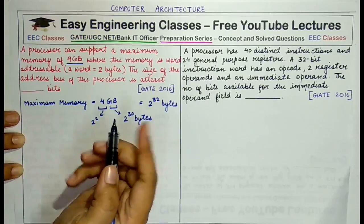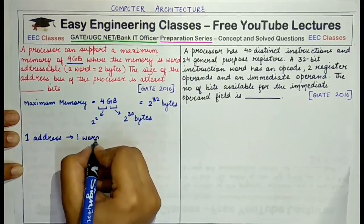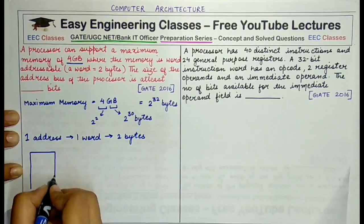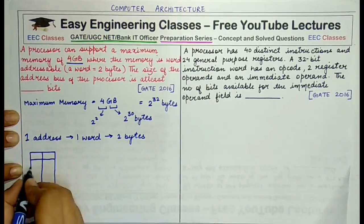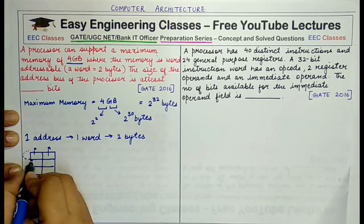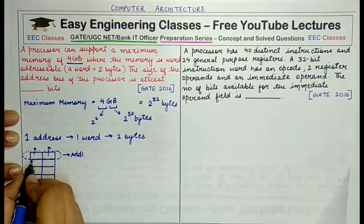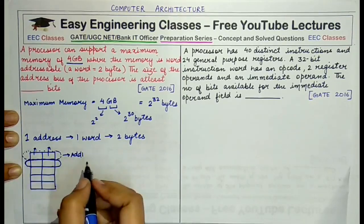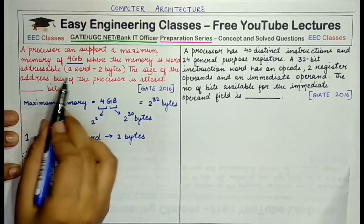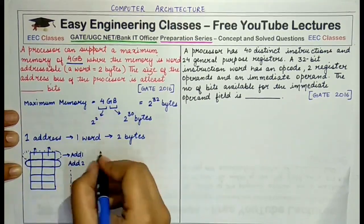Word addressable means one address represents one word in memory, and here one word is two bytes. You can imagine the memory layout where two consecutive bytes are lined together — this is one byte, this is another byte, and a single address is assigned to the combination of these two bytes. So address 1 is assigned to the first pair, address 2 to the next pair, and so on. Each address addresses 2 bytes in memory.